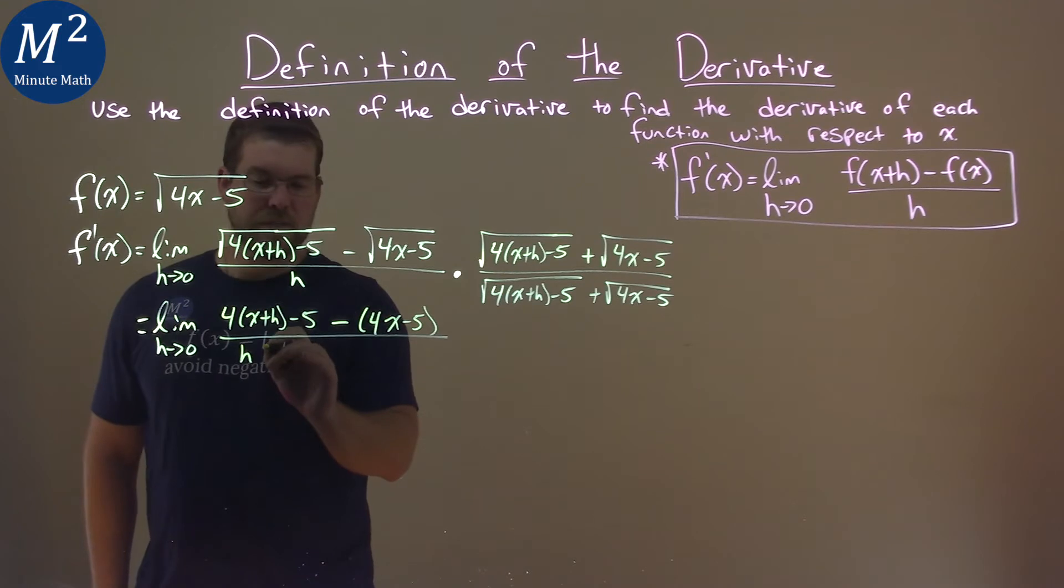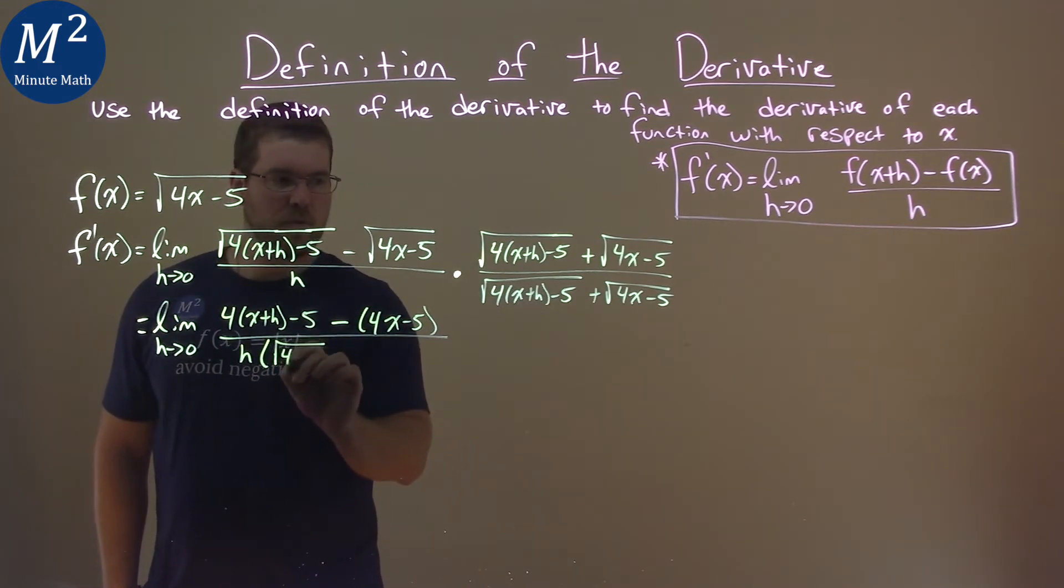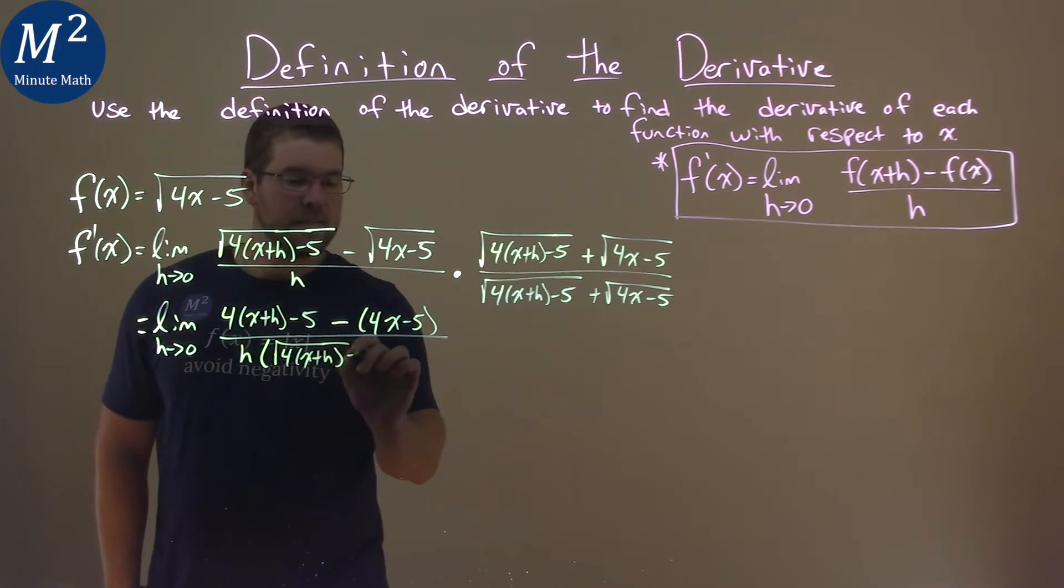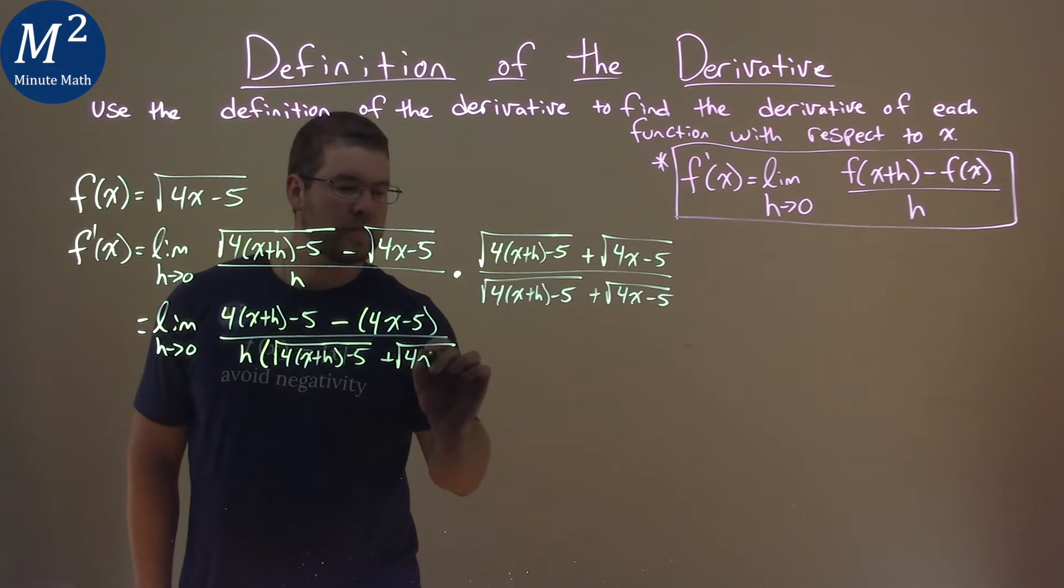The denominator's a little tricky. Well, it's long, not really tricky, I guess. h is there, and we have the other part there, square root of 4 times (x plus h) minus 5, plus the square root of 4x minus 5.